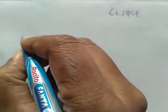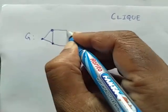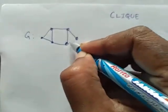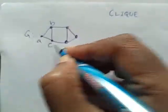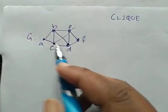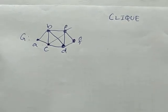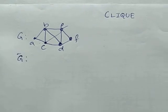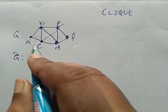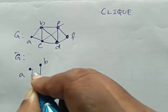Hello everyone. In this video we are going to study clique of a graph. Before defining what a clique is, consider a graph G. For this graph I am going to consider a subgraph such that that subgraph should be a complete subgraph. A complete graph is one where every vertex is connected to all other vertices. So A, B, C — this is one such subgraph, I will denote it G1.